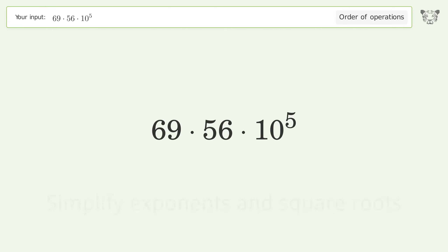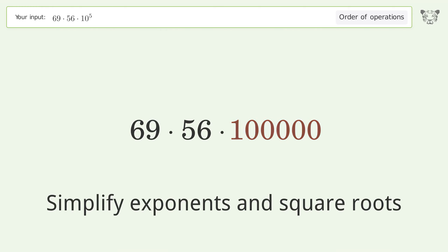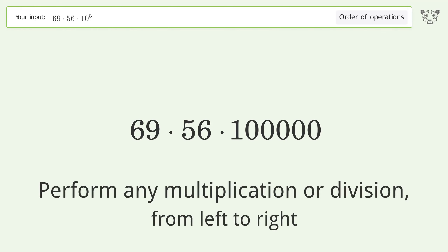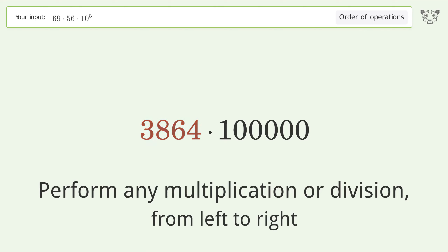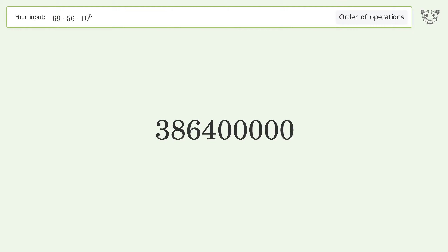Simplify exponents and square roots: 10 to the power of 5 equals 100,000. Perform any multiplication or division from left to right: 69 times 56 equals 3,864. Then 3,864 times 100,000 equals 386,400,000.